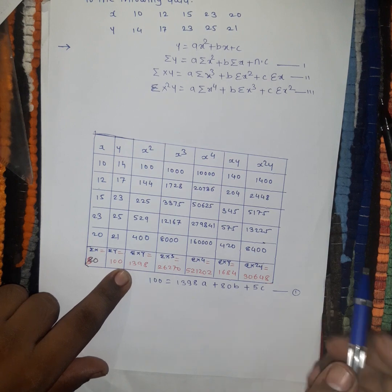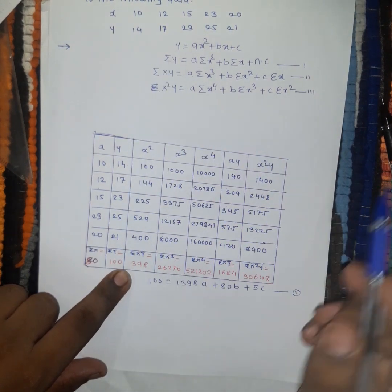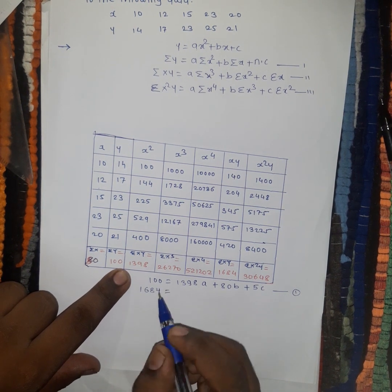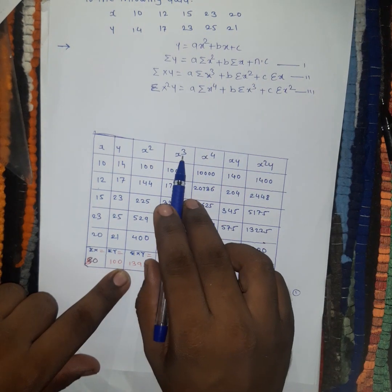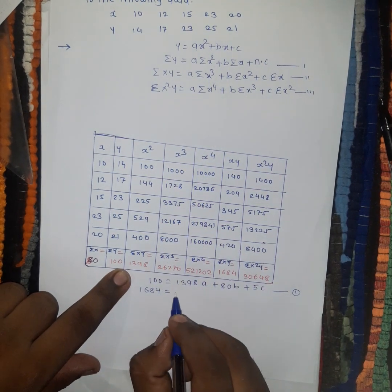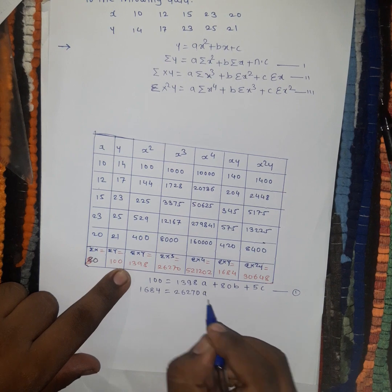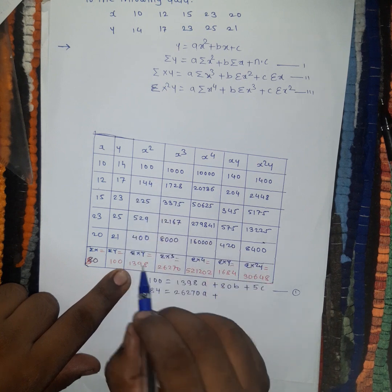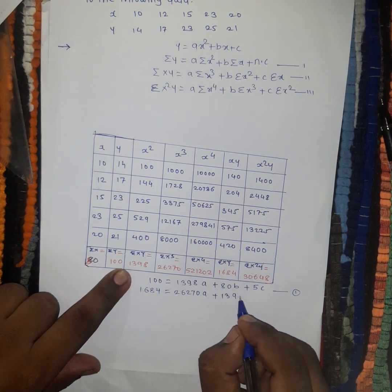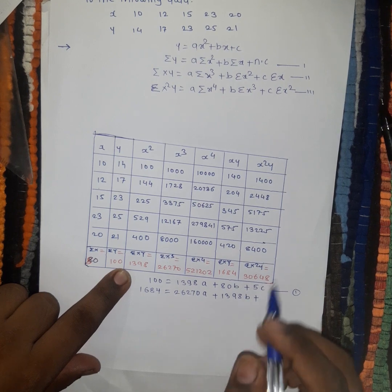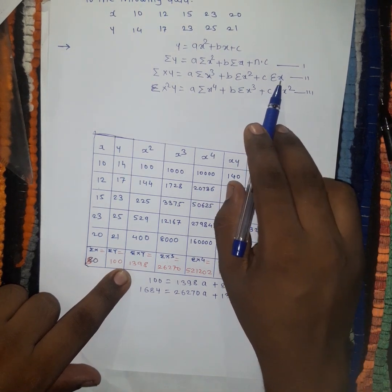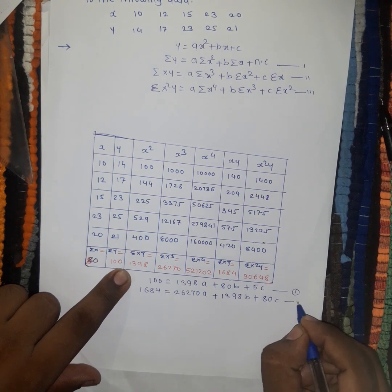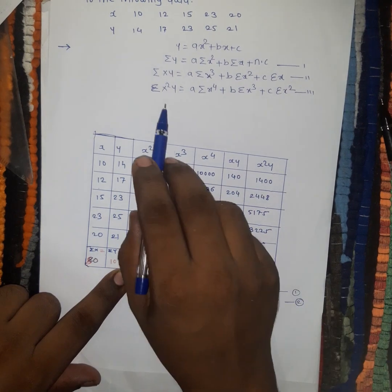The second equation uses summation xy, which is 1684. So: 1684 equals a times summation x cubed (26,270), plus b times summation x squared (1398), plus c times summation x (80). This is equation number two.